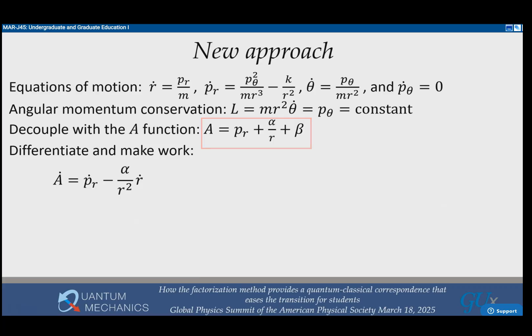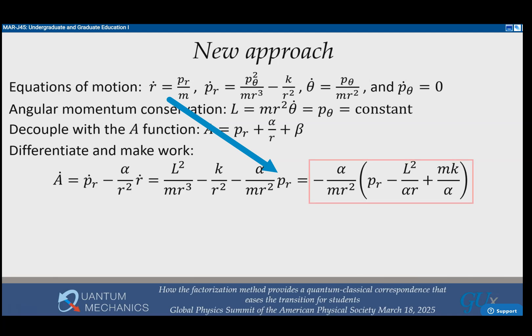We now have a different combination: the radial momentum plus alpha over r plus a constant beta. We do the same thing we did before. Calculate the time derivative, substitute in those equations of motion, factor out the coefficient of p r, and now I make this equal to A. That's very simple. This number minus l squared over alpha is alpha, and mk over alpha is beta.